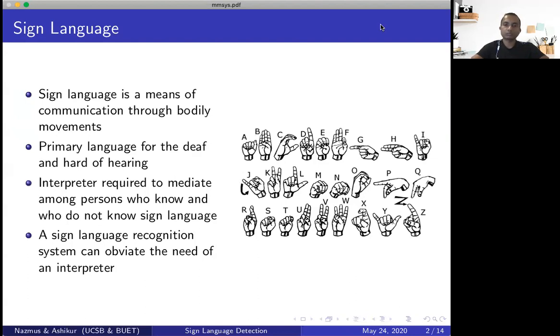So when a person who is knowledgeable about sign language tries to communicate with someone who does not know sign language, generally there needs to be some sort of an interpreter in between. If we do have a system which can detect sign language, we can bypass this interpreter. That's pretty much the motivation of our work.